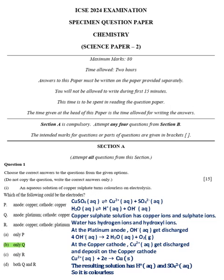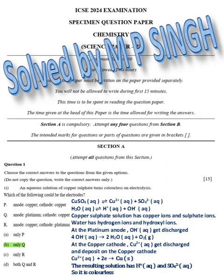ICSE 2024 Examination Specimen Question Paper Chemistry Science Paper 2 Solution. Section A, Question 1, Part 1, Answer B Only.